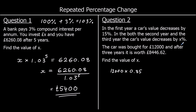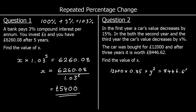Then for the next two years we don't know the percentage decrease, so we're going to call our multiplier y — and it's going to be y squared for two years. I didn't use x because the multiplier and the percentage are going to be different numbers. So the calculation is 12,000 × 0.85 × y² = £8,446.62.